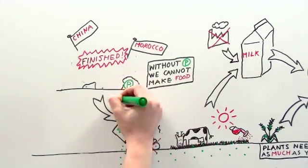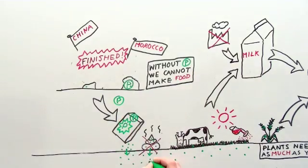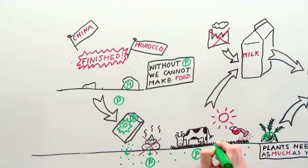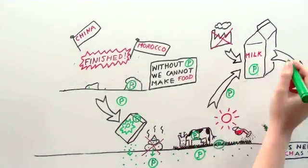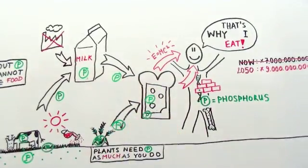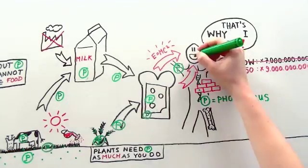So, let's follow the phosphorus. It travels from the mines, into the fertilizer, onto the soil, into the wheat and grass. From the grass, through the cow, into the cheese, and from the wheat into your sandwich. On your plate, and into your mouth.